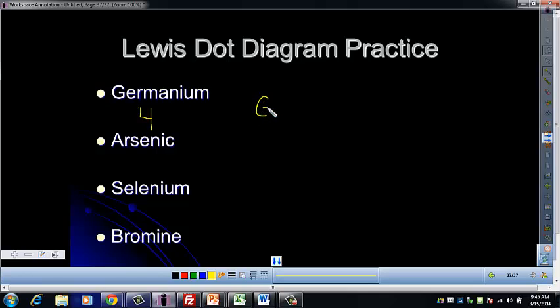Okay, so remember that the first two valence electrons go together. One, two. And then we fill the, these are our little P subshells, these other three sides, so one, two. So you should have two together and two by themselves.